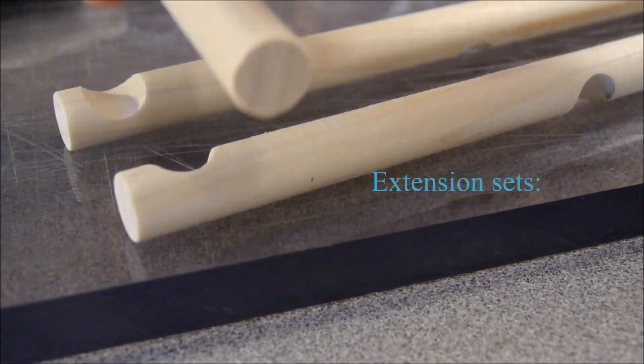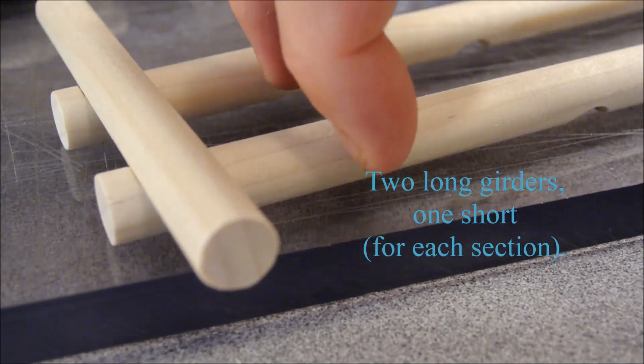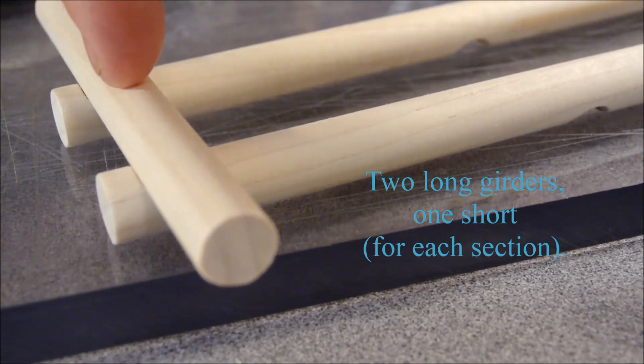And you can also extend the length of your bridge indefinitely by adding sections of two of the long girders paired with one of the short.